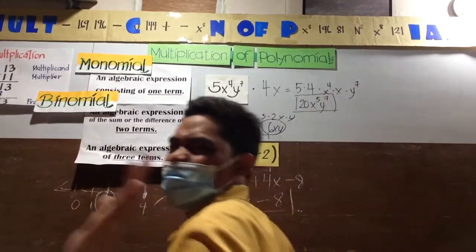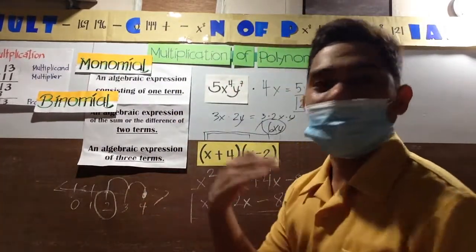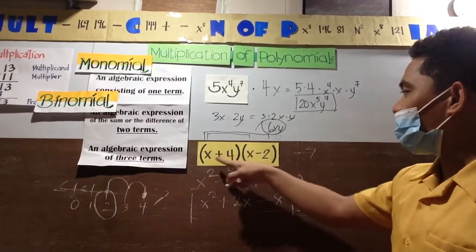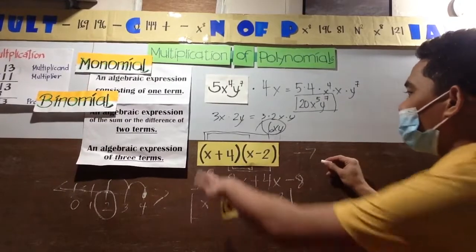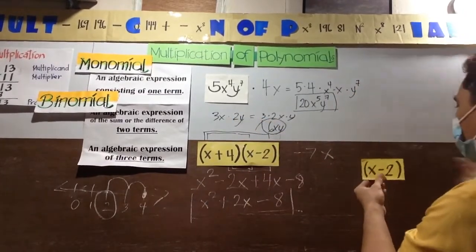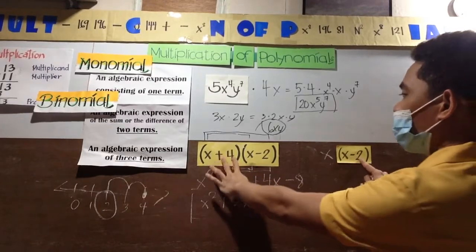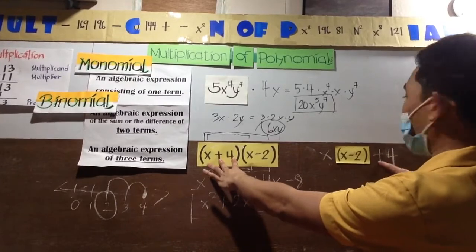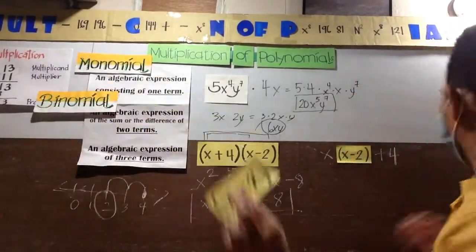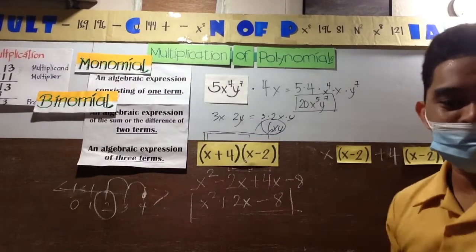Understood? Very good. If you want, you can also apply the other - you can apply the distributive property. Like for example here. You can apply the distributive property. Let's look at this, this will be the answer. Copy this x and distribute it now to all of these terms. So it will be like this: x times quantity x minus 2, then copy this 4.